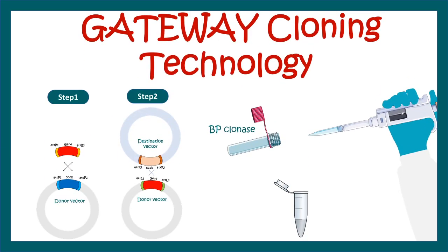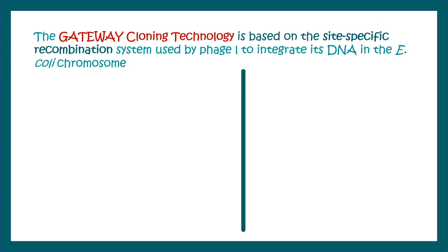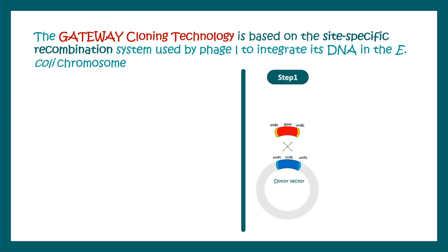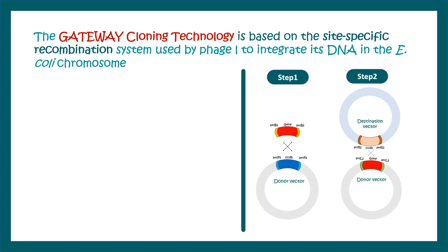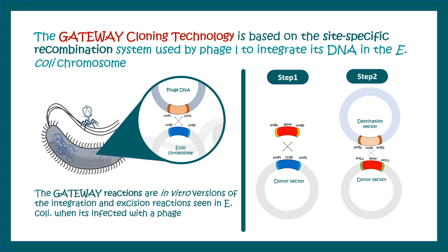Today we are going to talk about gateway cloning technology, which is a site-specific recombination based cloning system. This is based on how phage integrates its DNA in the E. coli chromosome. This reaction has two steps: Step 1, also known as BP clonase reaction, and Step 2, also known as LR clonase reaction. These steps are very similar to the way a phage integrates and excises its DNA from the E. coli genome — it's kind of like an in vitro version of this phenomenon.